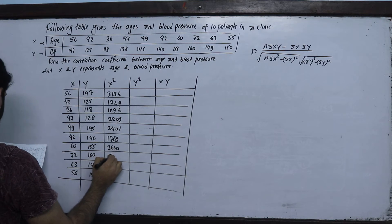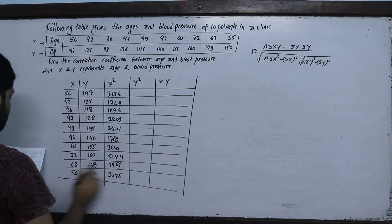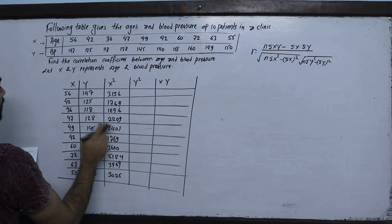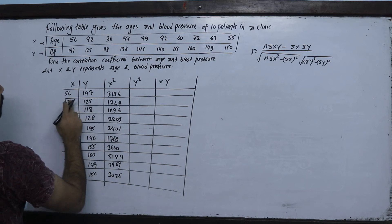Continuing x square: 42 square is 1764, 60 square is 3600, 72 square is 5184, 63 square is 3969, 55 square is 3025.